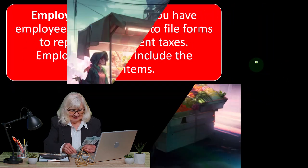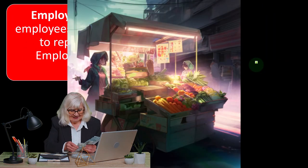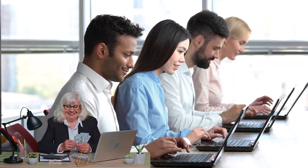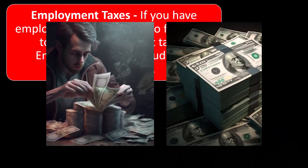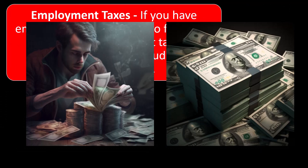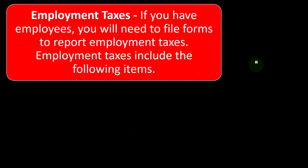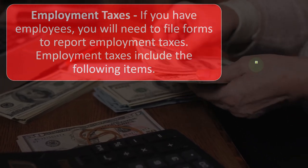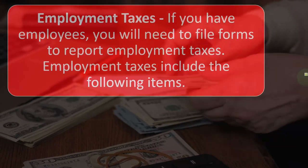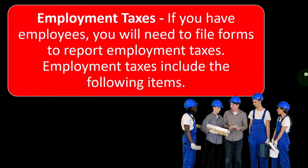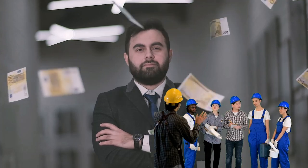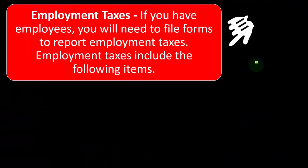With self-employment tax, the net income of the Schedule C is treated similarly to being an employee of your own business — you pay both the employee and employer portion of payroll taxes, Social Security and Medicare. With employment taxes, you are the employer with employees, and that structure is basically the same whether you're a sole proprietorship, partnership, LLC, or C corporation.